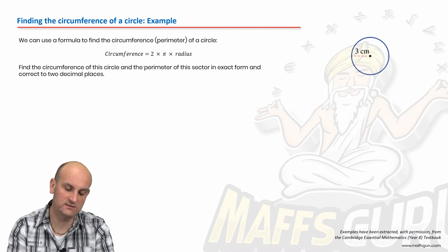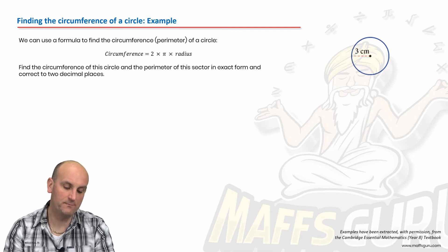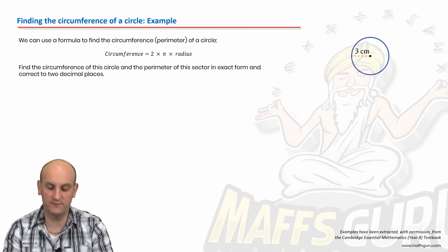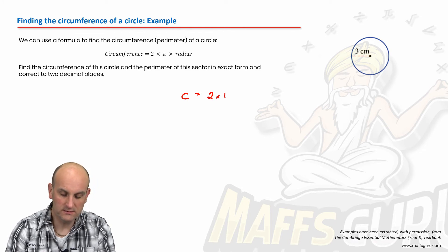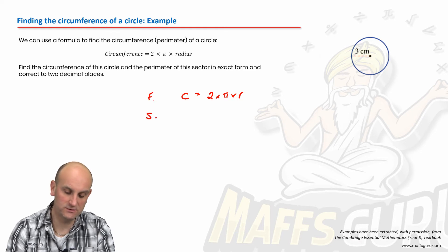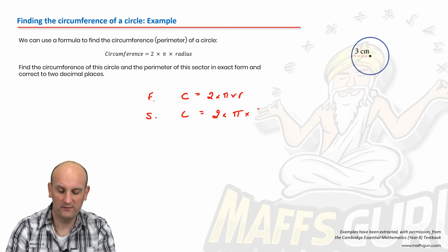Now, the sector is coming up in just a moment. So let's just deal with the circle first. Find the perimeter or the circumference of the circle. So we know circumference of a circle is two times pi times radius. So formula, I always start with formula, then we substitute.